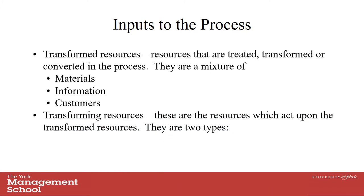We also have transforming resources — the things that act upon the other three resources and change them. There are two types: facilities, which include machinery, buildings, and equipment, such as a hotel room, a bedroom, a bar, food and drink. And of course, staff — staff who may be seen directly working with customers, or other staff who help in the operation of any successful enterprise, whether public or private sector.